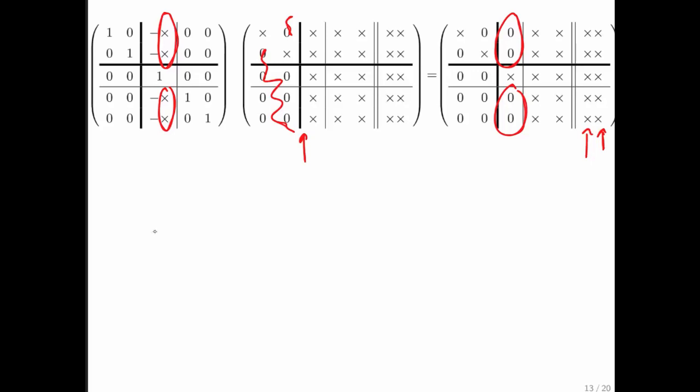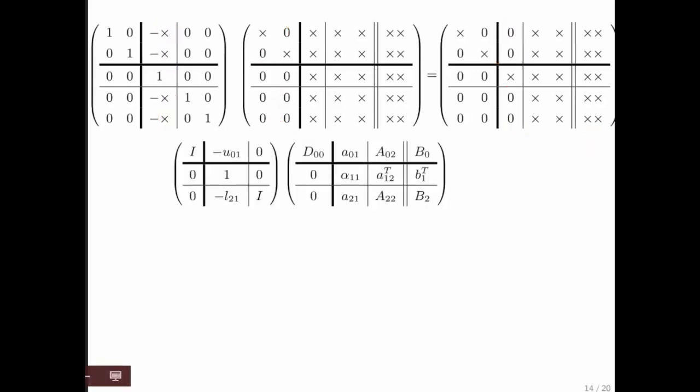And then we move on. So we can give these different regions names. So this now becomes U01 and L21. That's this part and that part. This here is the diagonal matrix that's sitting right here.